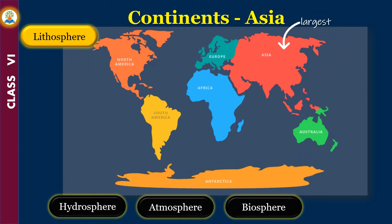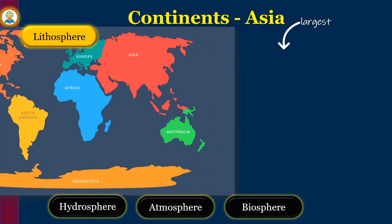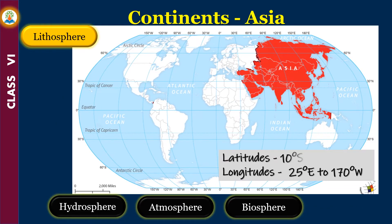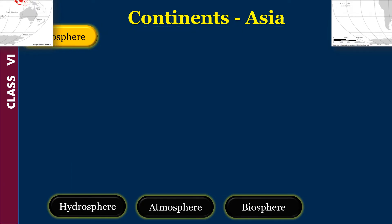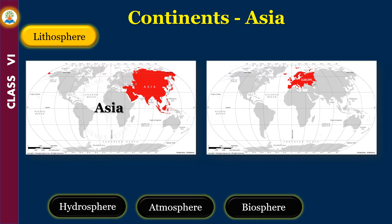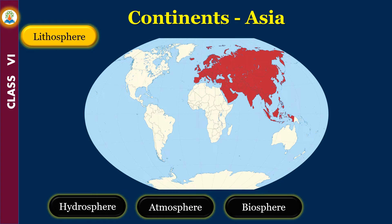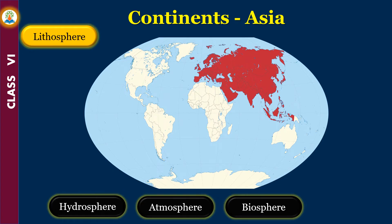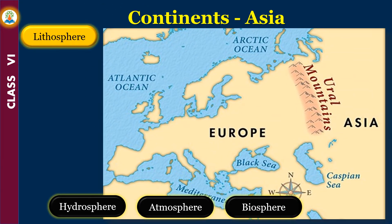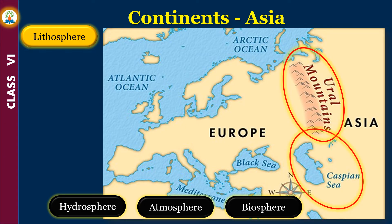Asia is the largest continent of the world. Together with Europe, it forms a continuous landmass known as Eurasia. It is separated from the continent of Europe by the Ural Mountains, the Caspian Sea, and the Black Sea.